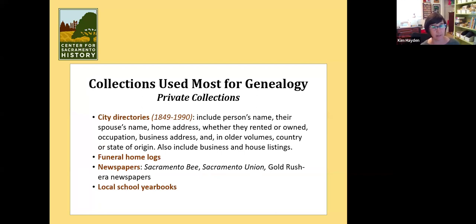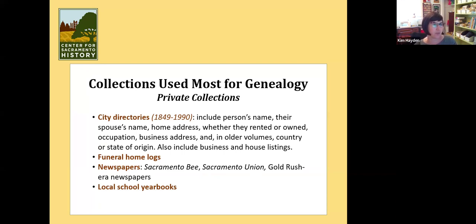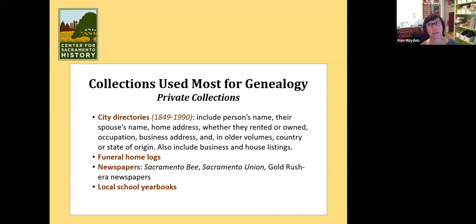If you have never used the city directory, these are the best things ever. They're kind of like a phone book, except they don't usually have phone numbers. They include so much information about a person. We have them from 1849 to 1990 for the city of Sacramento. We also have a few rural ones for the outlying areas of Sacramento — like the more rural areas — from the 1930s, 1940s, and 1950s, but not very many.